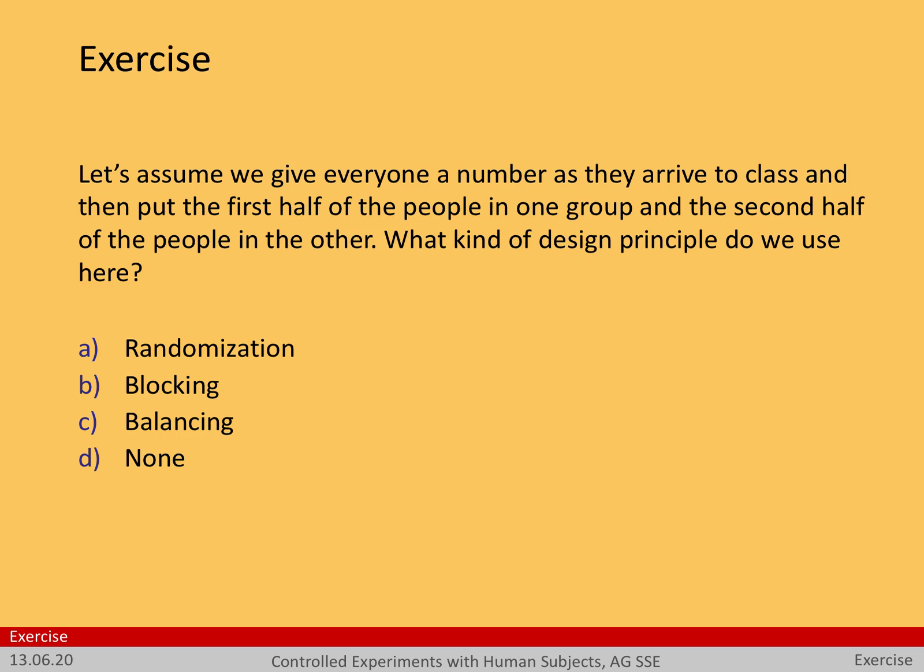Time for another exercise. Let's assume we give everyone a number as people arrive to class — a normal physical class. Everybody comes through the door, and as soon as they come through, we give them a sequential number. Then we put the first half of the people in one group, and the second half in the other. What kind of design principle do we use here? Have a look at the four options listed. Stop the video, make your decision, and come back. In principle, multiple can apply.